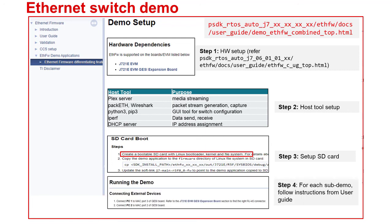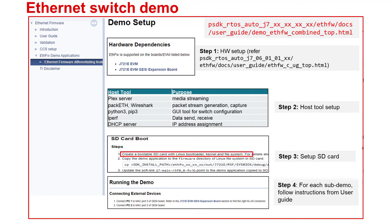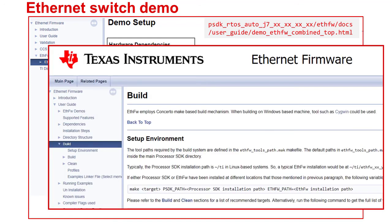For running the demo, we also need to use the GUI-based switch configuration tool to set up rules for packet forwarding and filtering. The demo application exercises a number of features of the integrated Ethernet switch. Follow the step-by-step instructions described in the user guide for running each of these sub-demos. For rebuilding the application along with the Ethernet firmware, follow instructions described under the build section of the Ethernet switch firmware user guide.